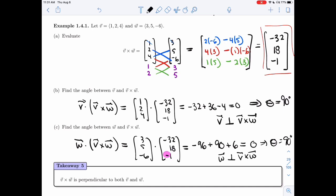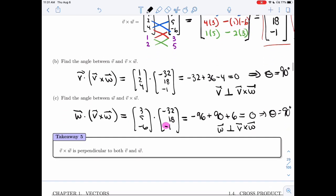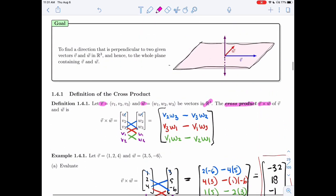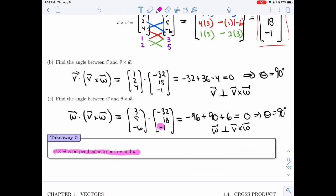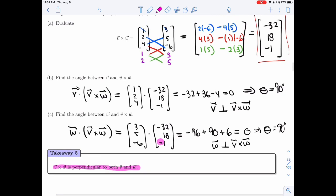At this point, you may have guessed that this 90 degree is not random. The takeaway makes it clear that V cross W is always perpendicular to both V and W. So this picture, one of these vectors is V cross W. So we found a way algebraically to get a vector that's perpendicular to both V and W.